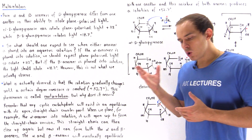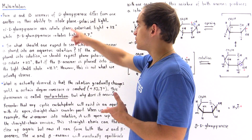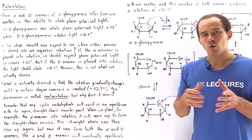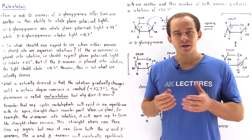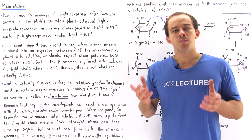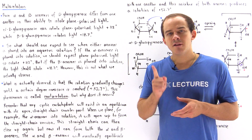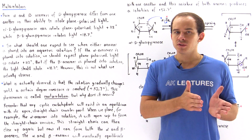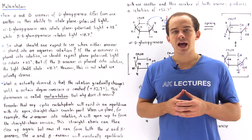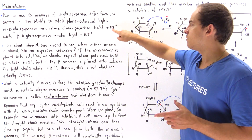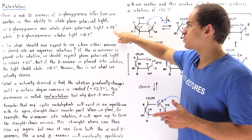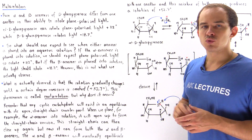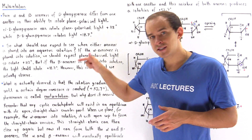Both alpha and beta versions of D-glucopyranose differ from one another with respect to their ability to rotate plane polarized light. Alpha-D-glucopyranose is capable of rotating plane polarized light with a degree measure of 112 degrees in the positive clockwise direction, while the beta anomer —